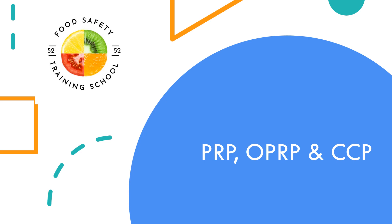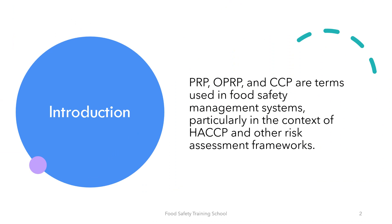Hello everyone and welcome to our channel. Today we'll be talking about the difference between PRP, OPRP and CCP. These three terms are commonly used in food safety management systems, particularly in the context of hazard analysis and critical control points and other risk assessment frameworks. These terms help to identify and manage potential hazards in food production processes.